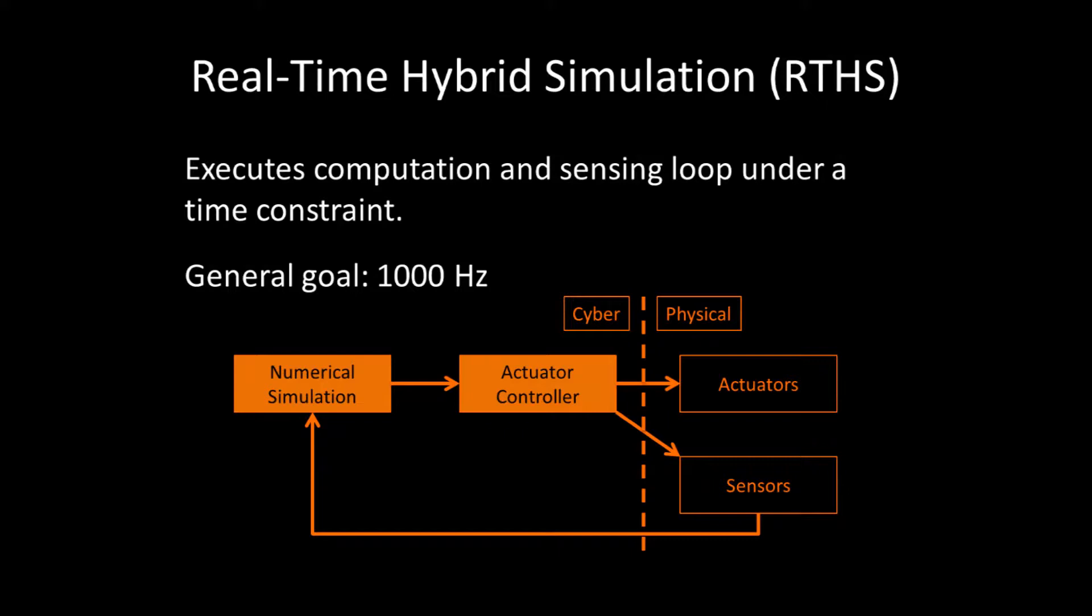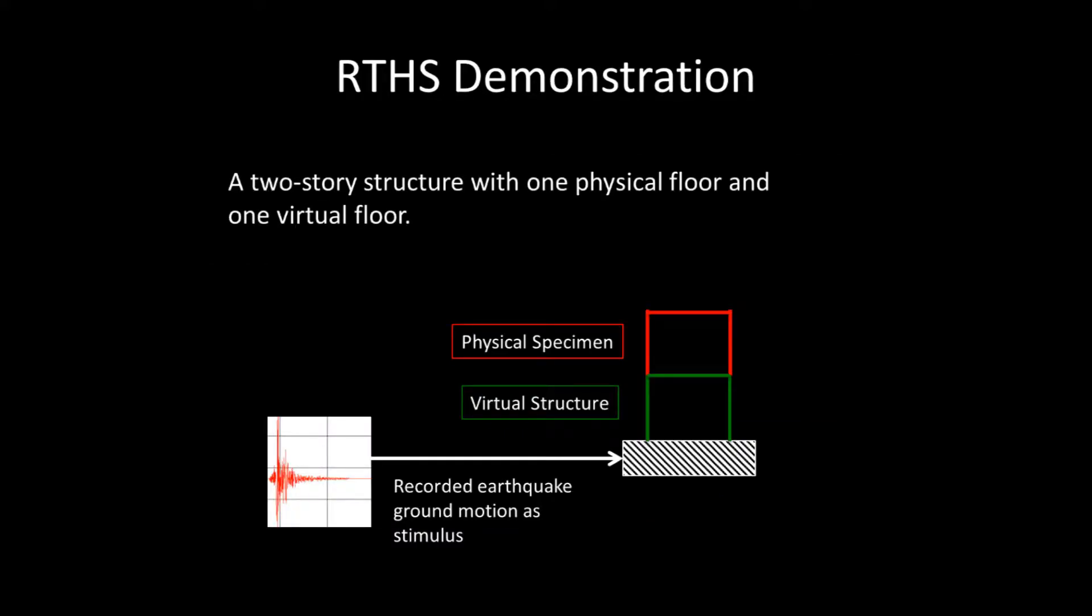The remainder of this video is a demo of RTHS in action, followed by several interesting experimental results from the last year. In this demonstration, we have a simple two-story composite structure. The ground floor is numerically simulated as a virtual structure, and a scale model attached to an electric shake table represents the first floor. For this test, historical earthquake ground motion is used to drive the composite structure. When the virtual structure is excited, the ground underneath the composite structure is moving.